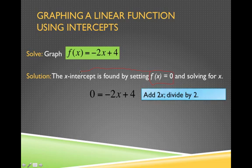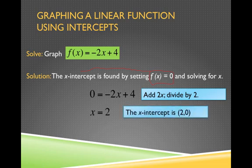And so I'm going to set y, or f(x), equal to 0, and I'm going to solve for x. I'm going to subtract negative 4. I guess here I'm adding 2x and then dividing by 2, and I'm getting x equals 2. So my x-intercept is at the point (2, 0), 2 on the x-axis.